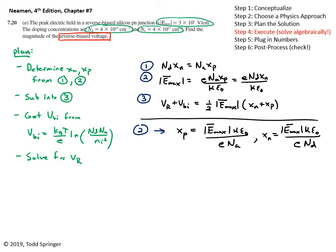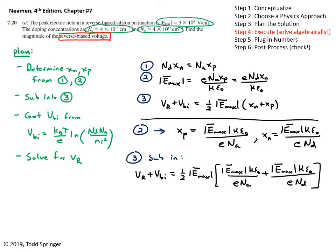So I'll now, but remember we're solving this algebraically. So I'll substitute these in to 3. So let's take 3 sub n. Let me try to go a little quickly here. Looks like that. I just took xn and xp and substituted them directly into that formula. And we can simplify this a little bit. So let's pull out all the common factors. I've got an emax squared. I've got a kappa epsilon naught over E. And then I've got in here 1 over NA plus 1 over ND. Okay. This is equal to vr plus vbi.